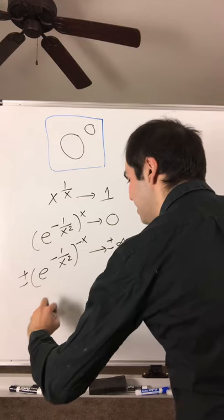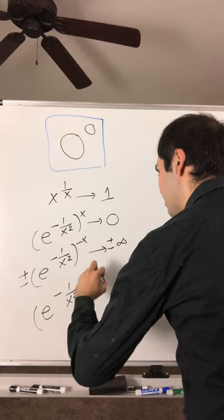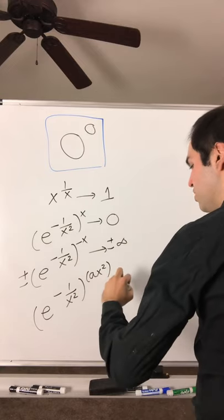Last but not least, e to the minus 1 over x squared to the ax squared, that goes to e to the minus a.